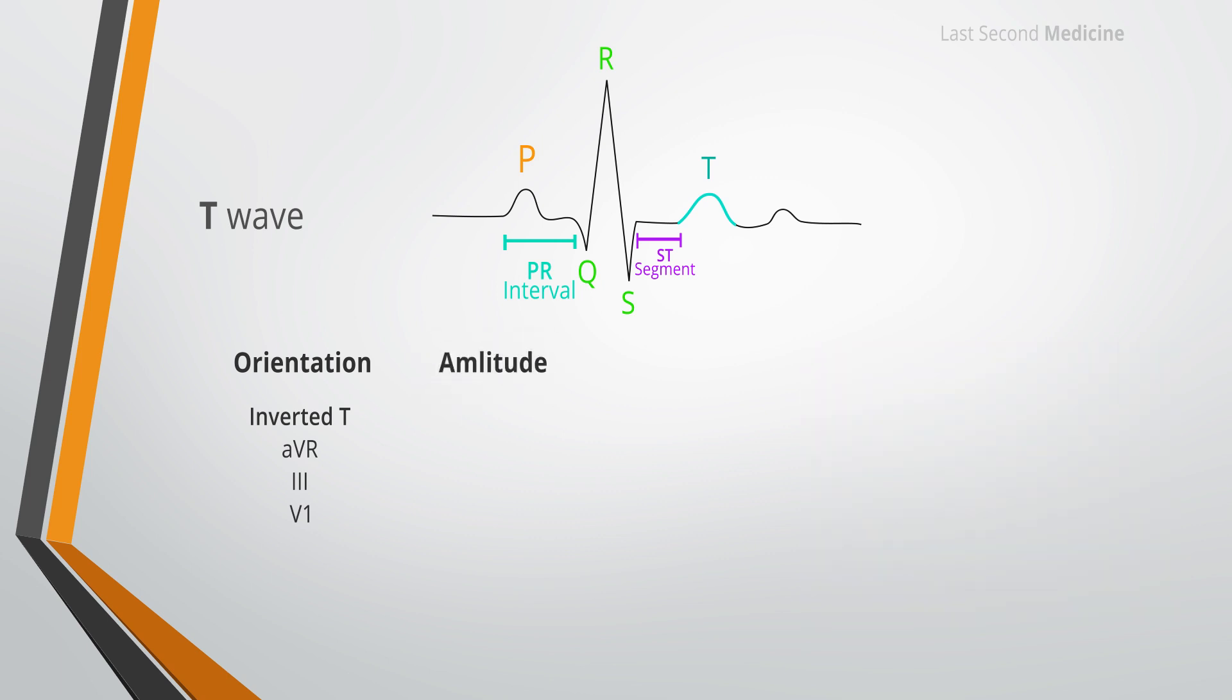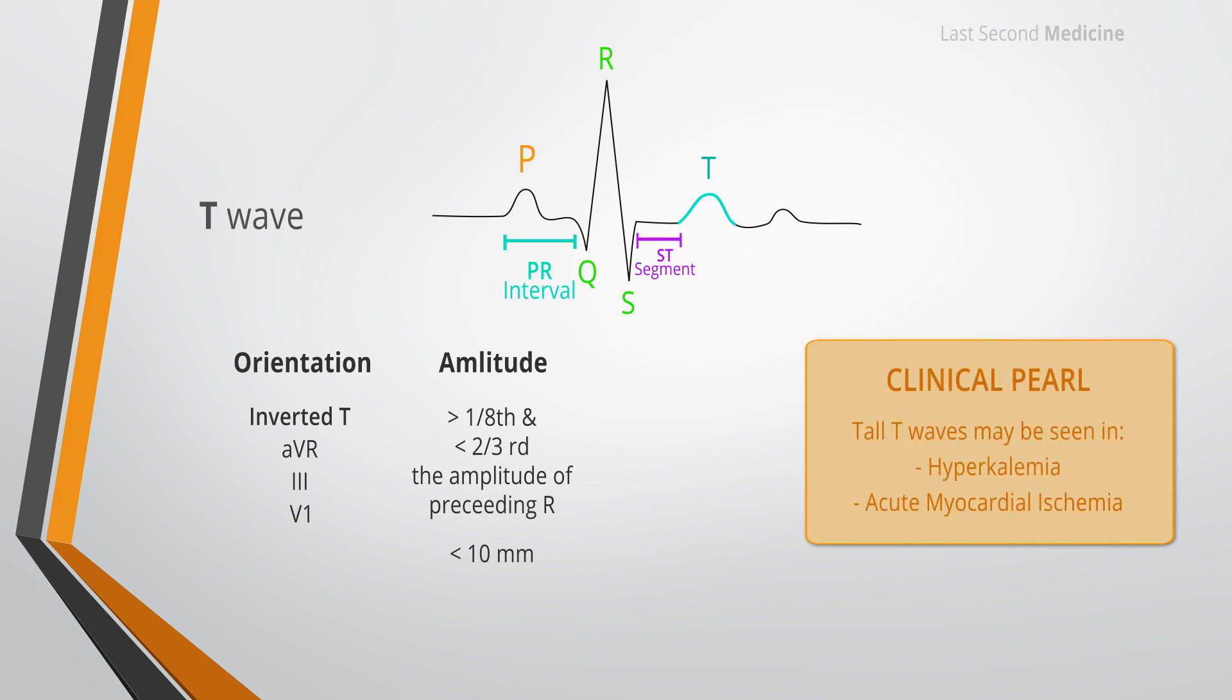No widely accepted criteria exist regarding T wave amplitude, though the tallest T waves are seen in lead V3 and V4. As a general rule, T wave amplitude corresponds with the amplitude of the preceding R wave. The T wave should generally be at least 1/8th but less than 2/3rd of the amplitude of the corresponding R wave. T wave amplitude rarely exceeds 10 millimeters. Tall T waves may be seen in acute myocardial ischemia and are a feature of hyperkalemia.